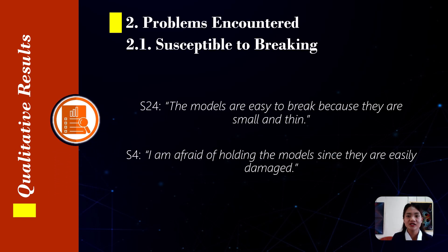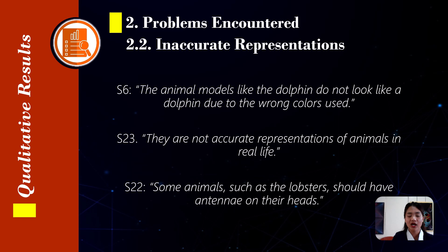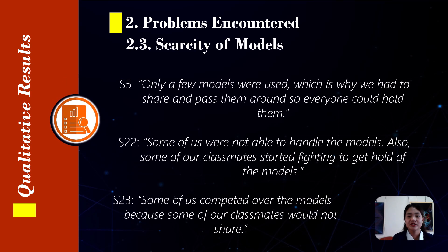The second main theme pertains to the challenges experienced by the students in using the 3D printed models. Sub-theme 1 refers to the models being susceptible to breaking. The durability of the 3D models was a concern, with some students noting that most were susceptible to breaking. They described that some models were smaller, thinner, and prone to damage. Students mentioned that the models could easily snap and break, making them nervous to hold some models. Sub-theme 2 refers to the models' inaccurate representations. Some students pointed out specific model inaccuracies such as incorrect colors or missing features. A student pointed out that the dolphin's color should be grayish to reflect its real-life appearance accurately. Another remarked that the lobster should have antennae, which were absent in the model. Sub-theme 3 refers to the scarcity of models. The scarce number of models caused students to share them with peers and pass them around the classroom, leading to conflicts among classmates over access.